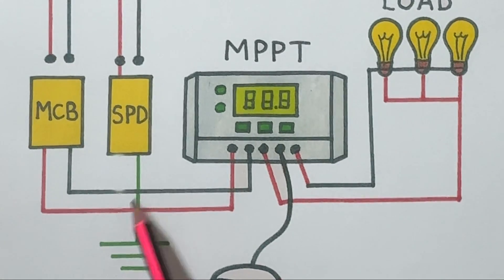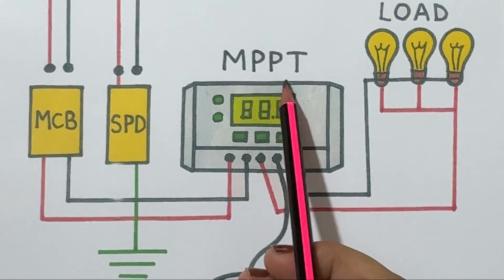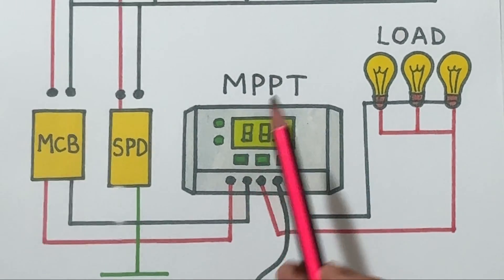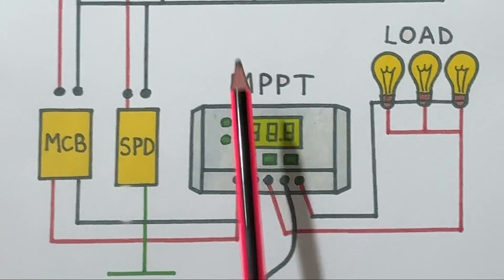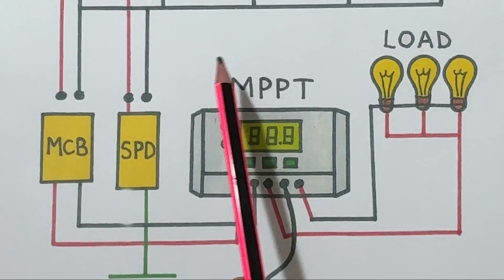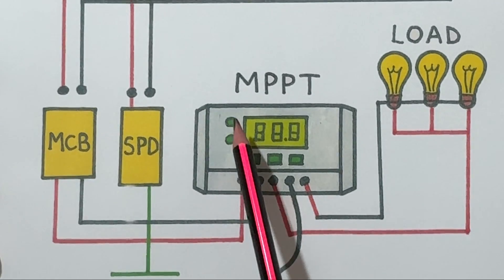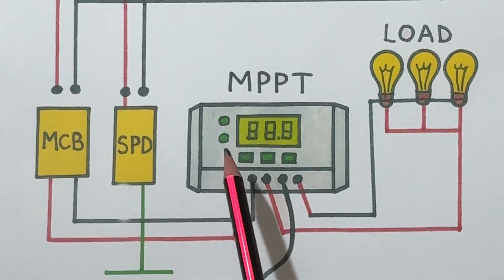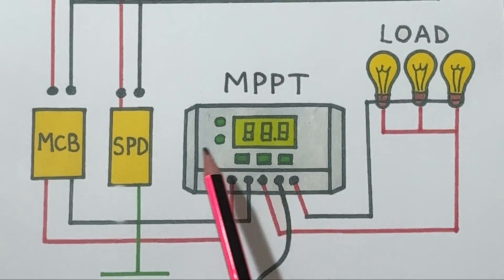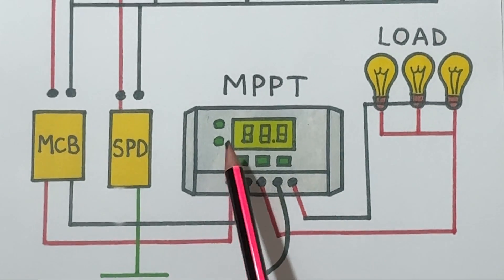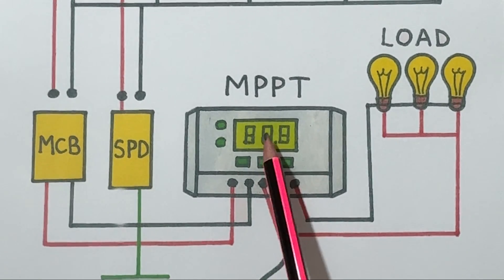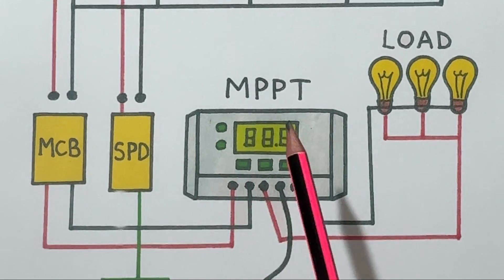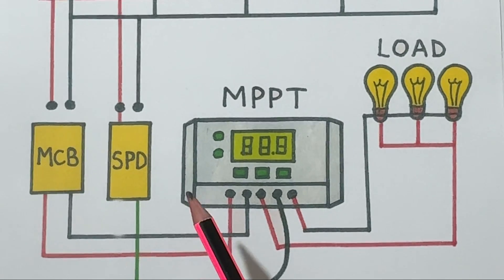Now the power goes into the MPPT charge controller. MPPT stands for maximum power point tracking. This device is like the brain of the solar system. It constantly adjusts the voltage and current to extract the maximum possible power from the panels. It makes sure the solar energy is used efficiently to charge the battery and supply power to the load at the same time.